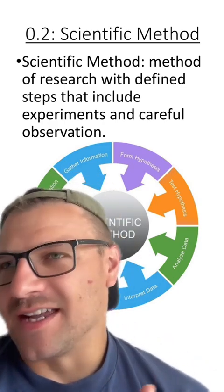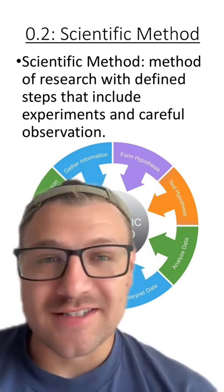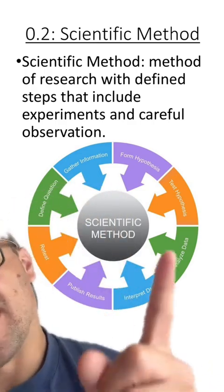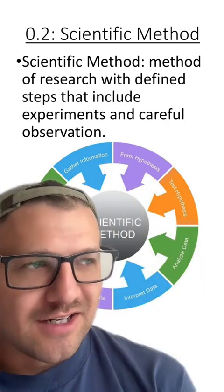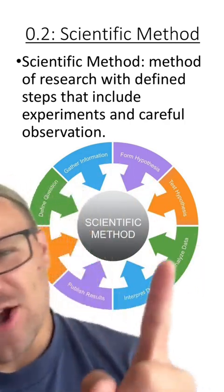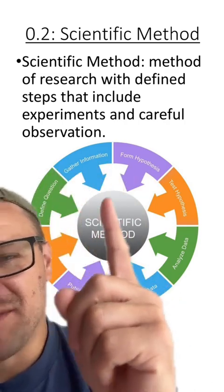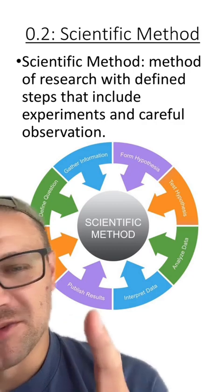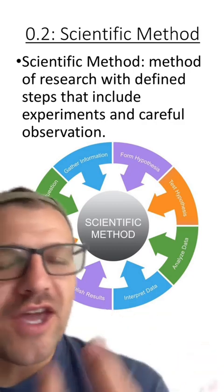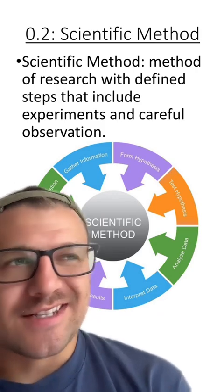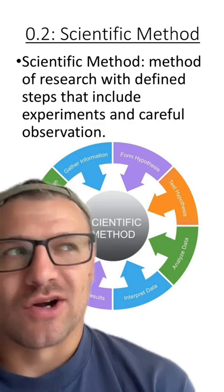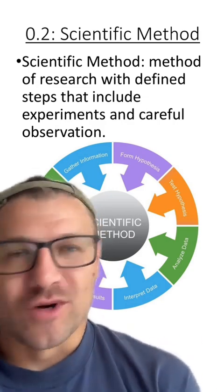There's a lot of different diagrams and steps that go into the scientific method, but I like having a circular pattern instead of a linear sequence of events. Because all of these things like gathering information, forming hypotheses, publishing results, and interpreting data all go into the scientific method, but they're not a series of linear events that have to occur on a day-to-day basis for scientists.